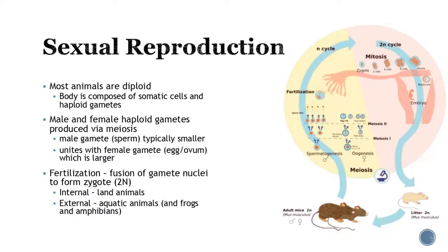One of the primary forms of reproduction in the animal kingdom is sexual reproduction. Most animals are diploid — meaning they have both copies of chromosomes in their cells. For humans, that's 46 chromosomes arranged in 23 pairs: 23 from mom and 23 from dad. If you only have one copy, you are haploid. Most of the cells in your body are diploid — what we call somatic cells.